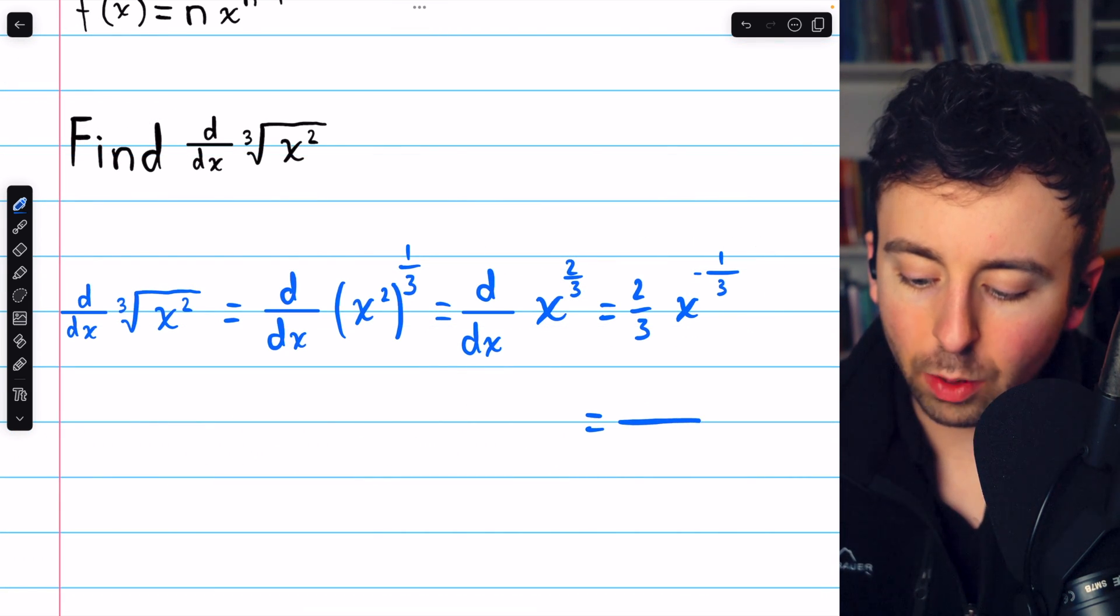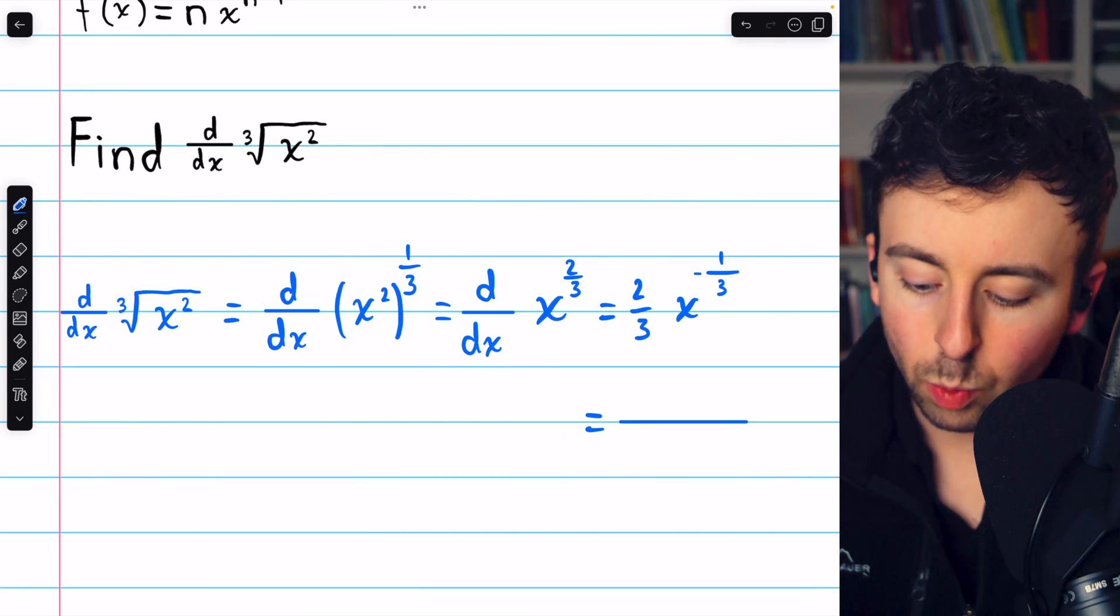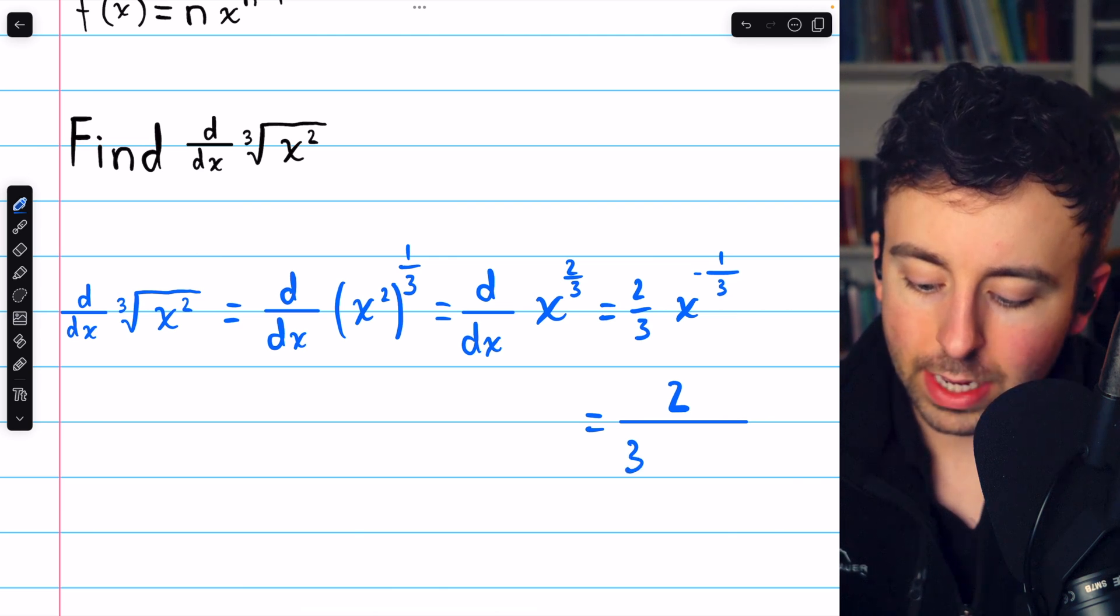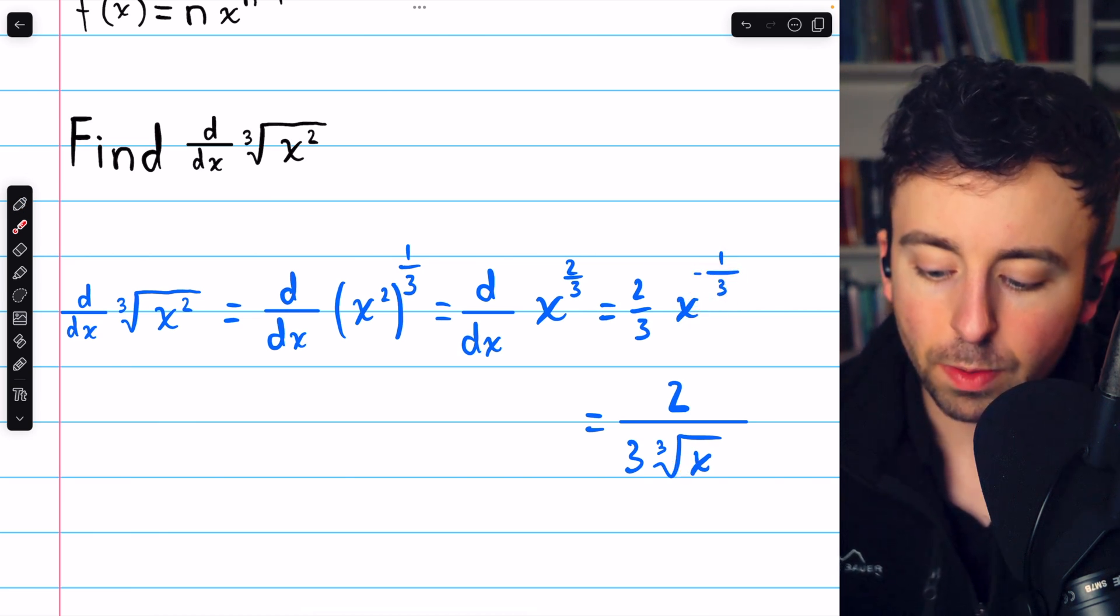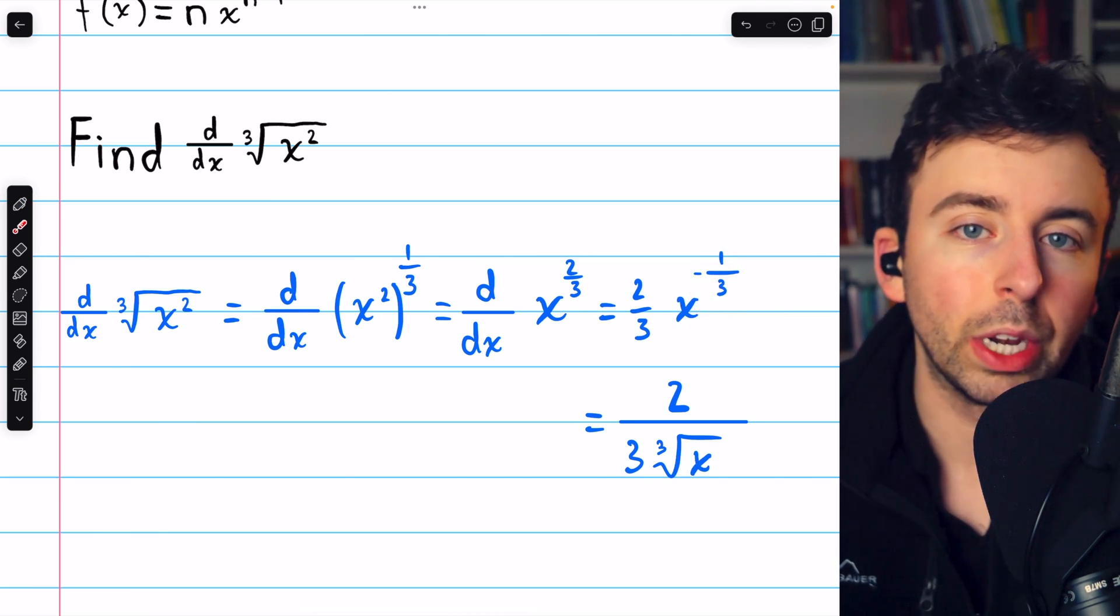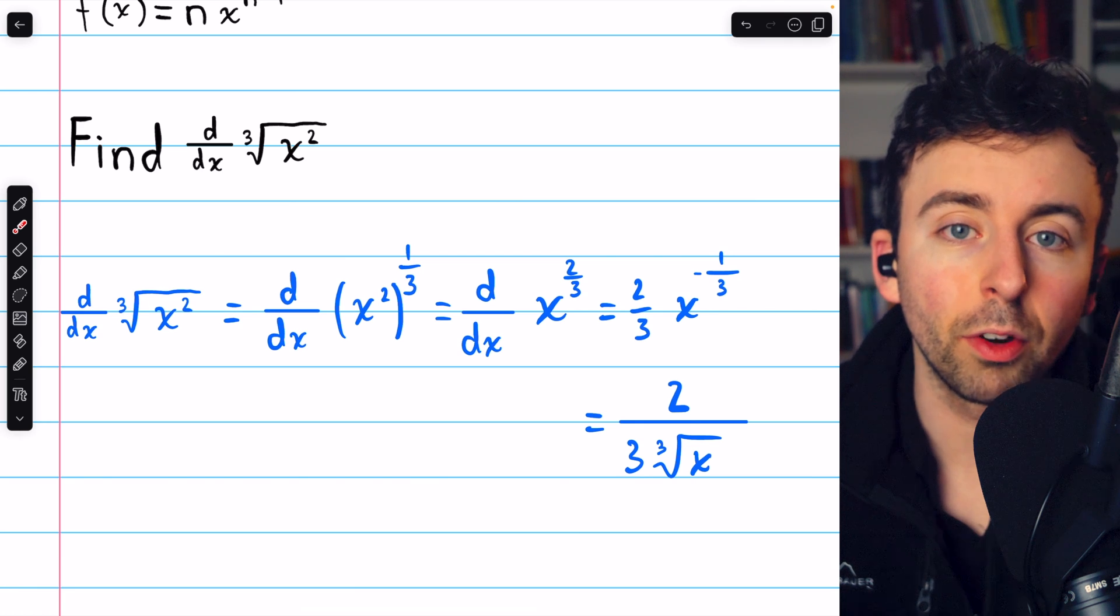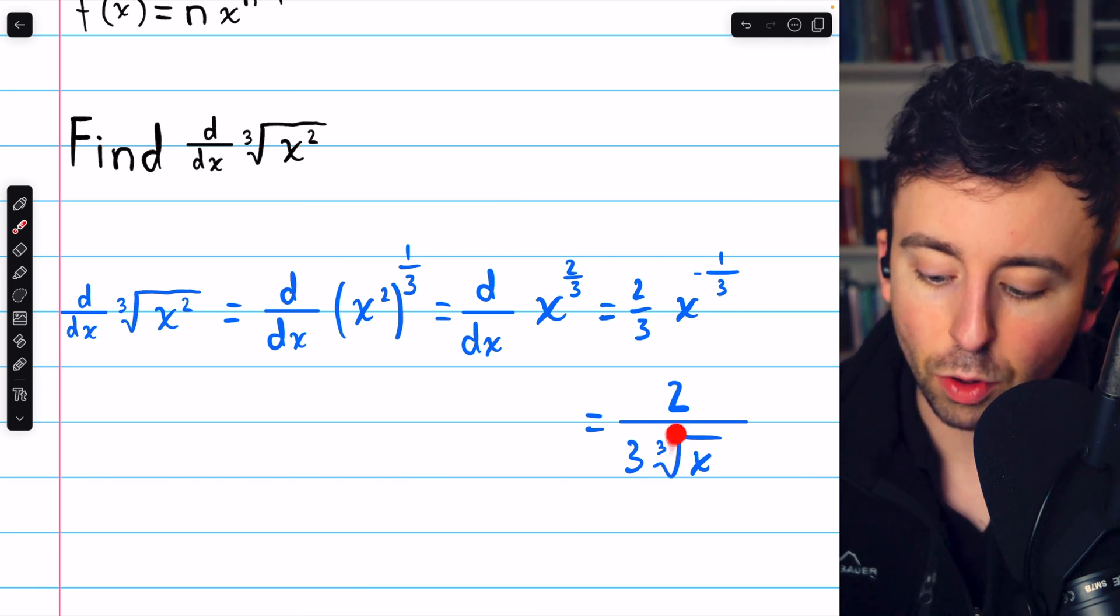If you prefer to write it without a negative power, we could write it as two over three times the cube root of x. Bringing this down to the denominator makes the power positive one-third. And of course, one-third power is the same as a cube root.